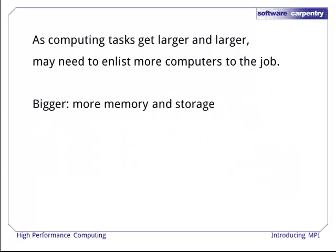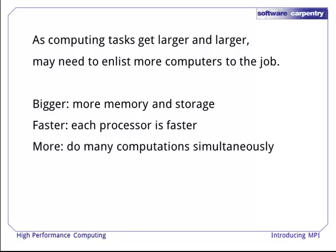We might want to do bigger problems requiring more memory or storage than is available on one machine. We might need the computation to go a lot faster than it would on one computer, so we need access to more processors. Or we might just want to do more computations than is feasible on one computer, running enormous parameter sweeps that would take months or years if done sequentially on one desktop computer.